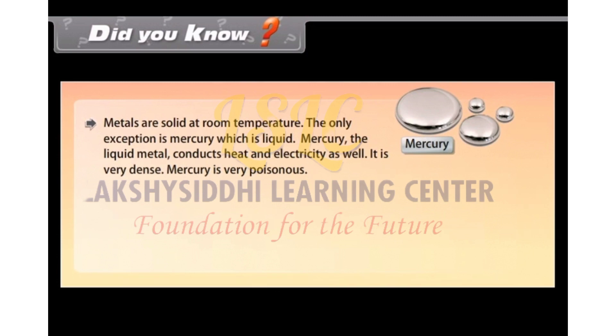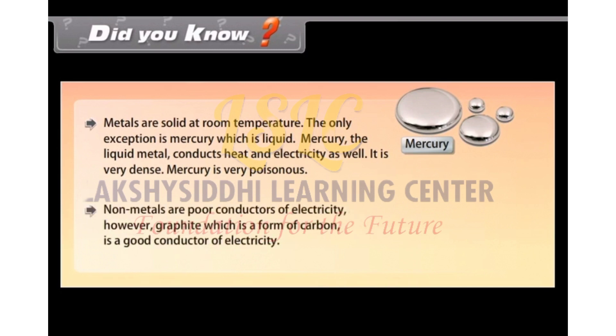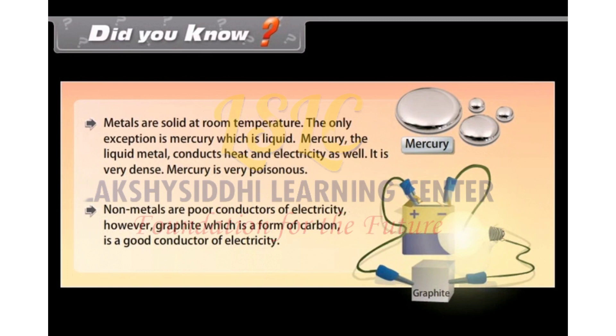It is very dense. Mercury is very poisonous. Non-metals are poor conductors of electricity. However, graphite, which is a form of carbon, is a good conductor of electricity.